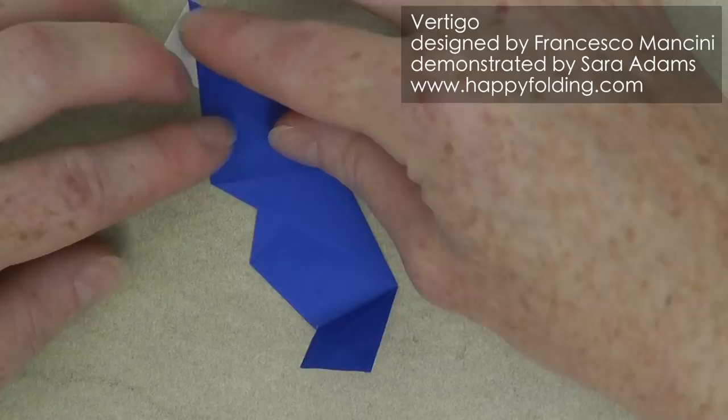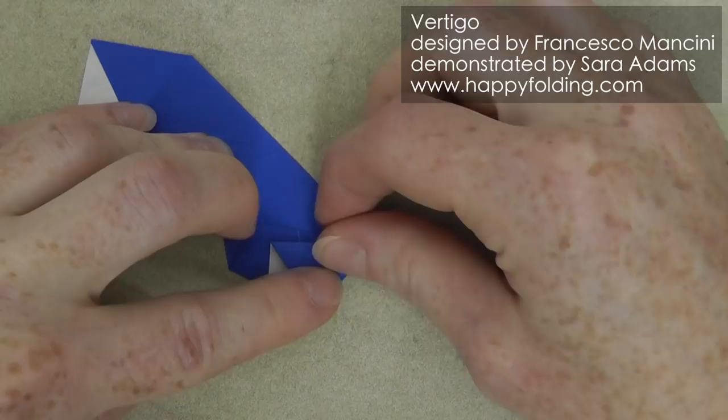And if you first do the mountain fold connecting the points and then the other one, then you'll always get this angle right. And then unfold, and repeat on this one.